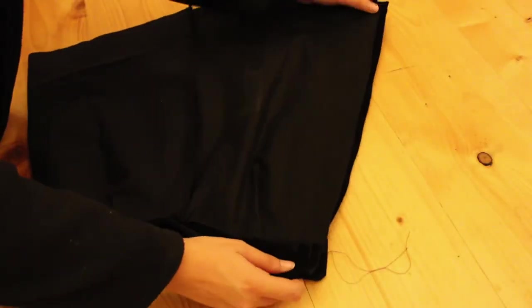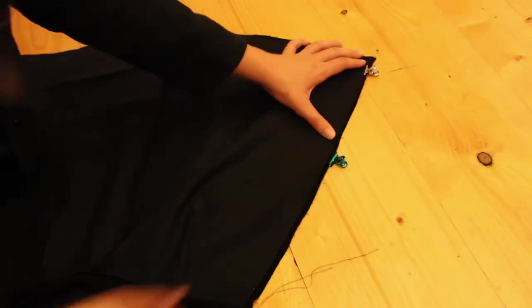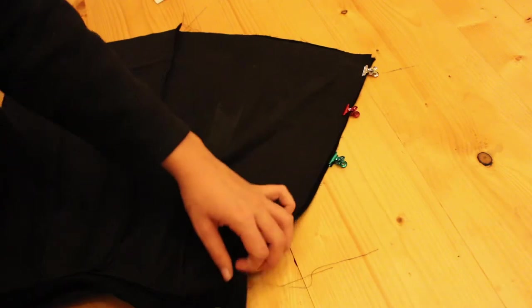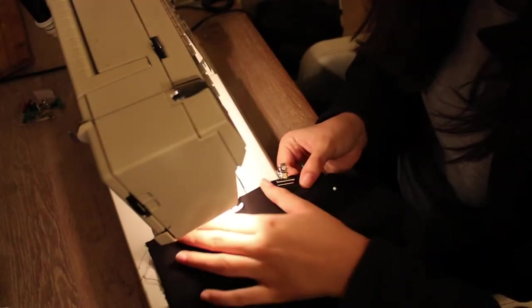Then you can fold your skirt in half and pin the right sides together until where the zipper needs to be. And then again, straight stitch one centimeter from the edge.